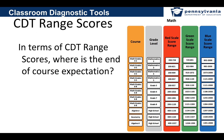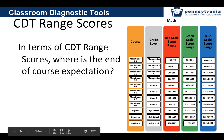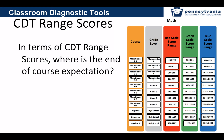Where is the end of course expectation? In our reporting, the colors are often shown as red, green, and blue. When you're looking at the CDT group map or individual map, where green meets blue is the end of course expectation, just like it is on the CDT range scores.